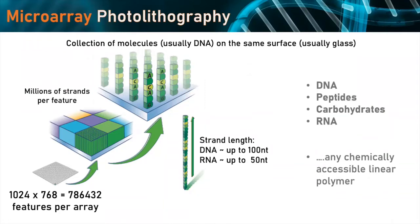That's the total number of different sequences we can make in one go. For DNA we can make sequences up to about 100 nucleotides; for RNA up to about 50 nucleotides. Each of those features contains the same sequence, and we estimate that we have about one hundred thousand up to about a million of the same molecule — in this case the same sequence — per feature.